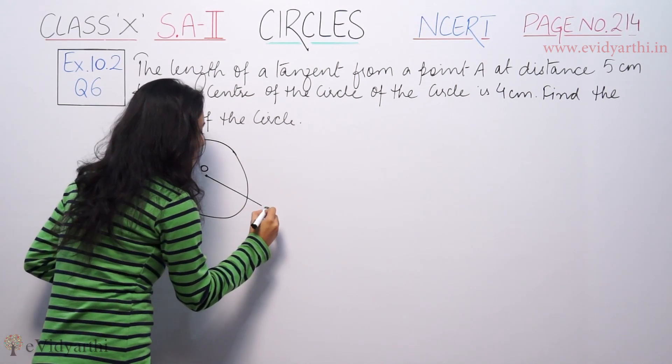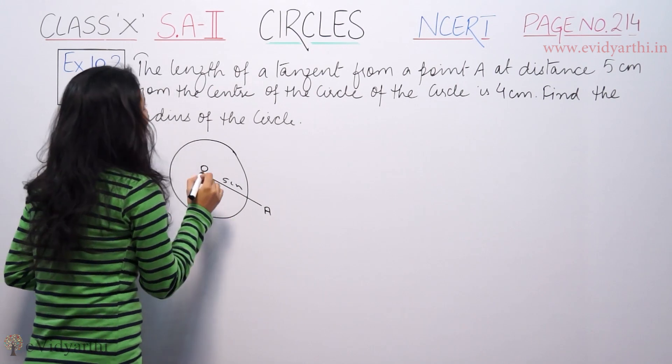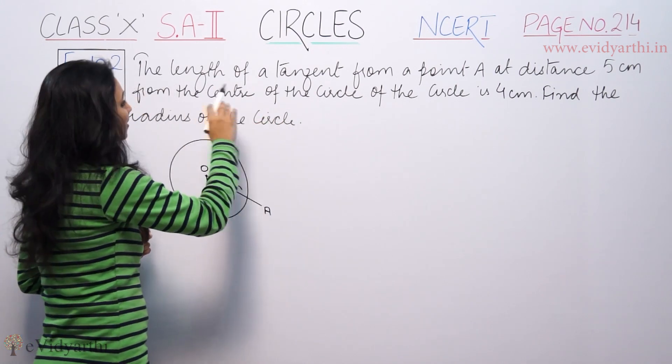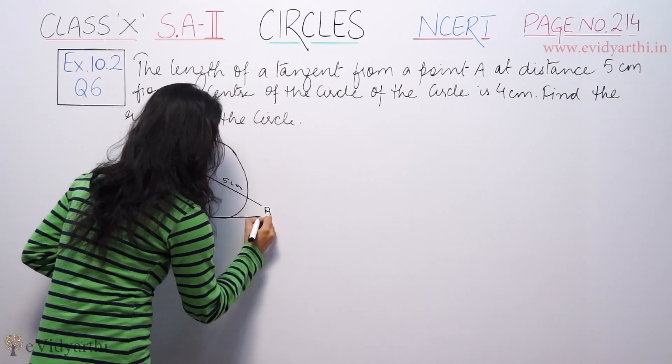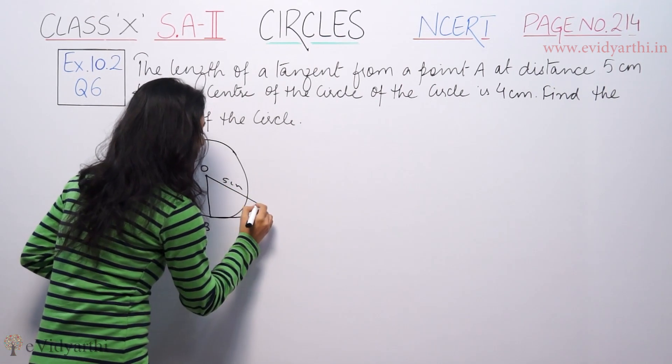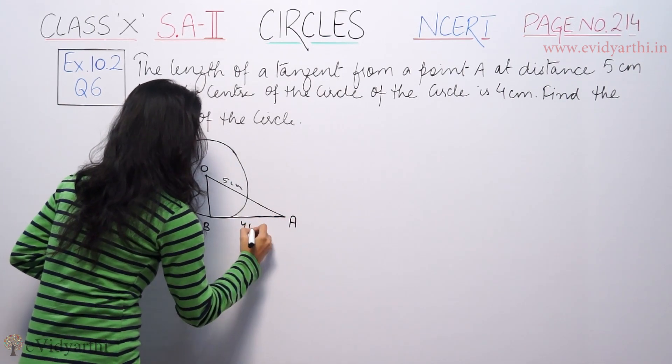Let's suppose this is B. Tangent length is 4 cm. This is 4 cm.